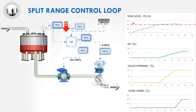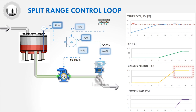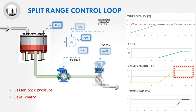In this example, we observe that the control valve opening is always at 100%. With the control valve fully open, there is less back pressure to the pump. The control valve will also be subjected to lesser wear and tear as it always stays at 100% and is not throttling.